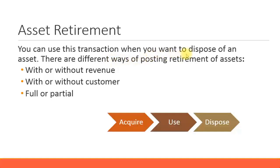The various ways of posting retirement of assets in SAP can be broken down into three main categories. You can post it with or without revenue. Sometimes when you sell an asset, you might get a secondhand market for it, so you actually sell it with some revenue. For example, you might buy a laptop and after two years want a faster one - you can still sell the old laptop with some revenue. You won't get the original price, but you can get a reasonable amount.